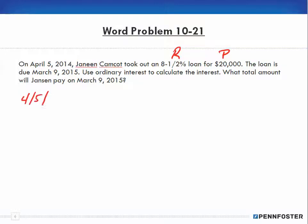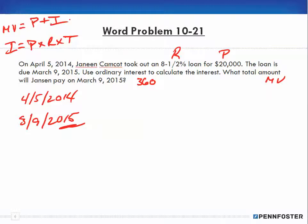It says use ordinary interest, so we're going to use the 360 as part of our time calculation. What total amount will Janine pay on March 9th? That total amount is the maturity value. We're going to use interest equals principal times rate times time, and maturity value is principle plus interest.